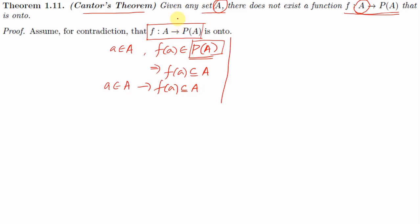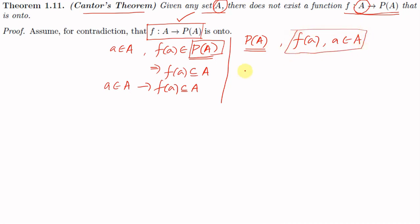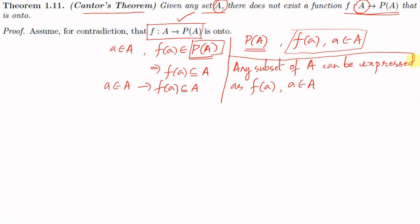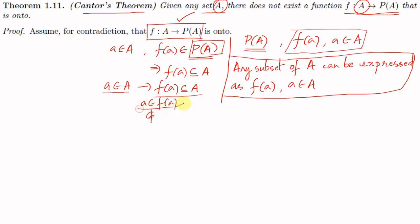Since we assume f from A to P(A) is onto, any element of P(A) — that is, any subset of A — can be written as f(a) for some a in A. For any a in capital A, f(a) is a subset of A. Now it is possible that a is an element of f(a), and it is also possible that a is not an element of f(a). This purely depends on the function f.